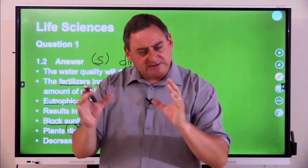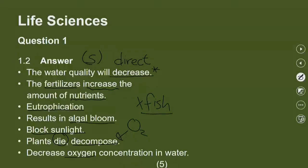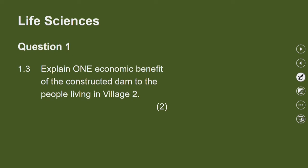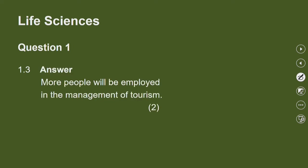Now talking about the economy — explain one economic benefit of the dam for the people living there. Our answer could be: more people will be employed, and we can even have tourism there because people have to work in the tourism industry. We have created jobs, but we should limit the impact on the environment while doing all of this. And that can be done.